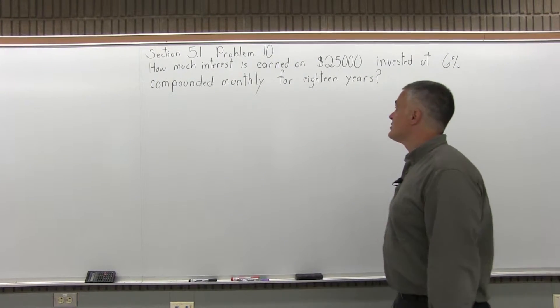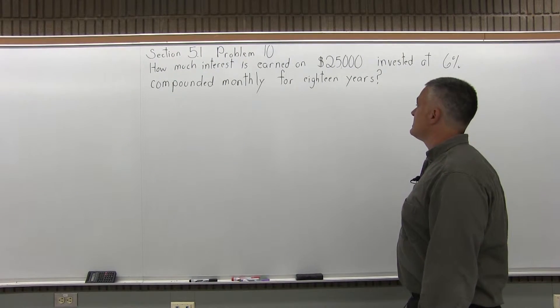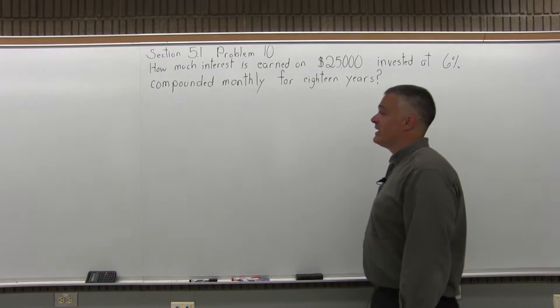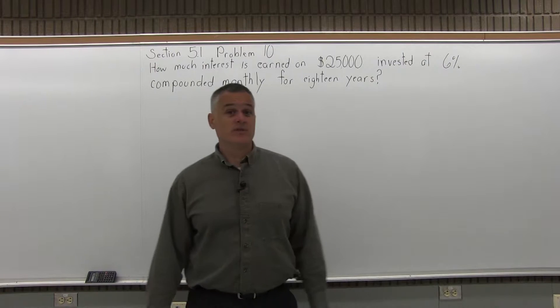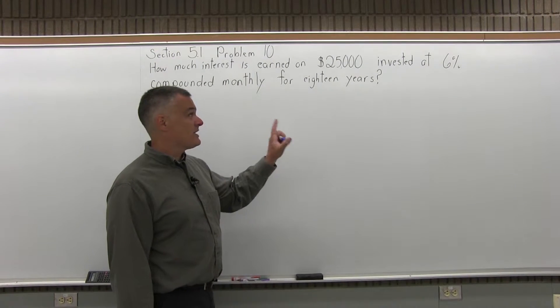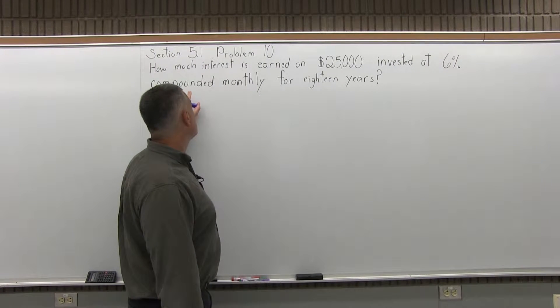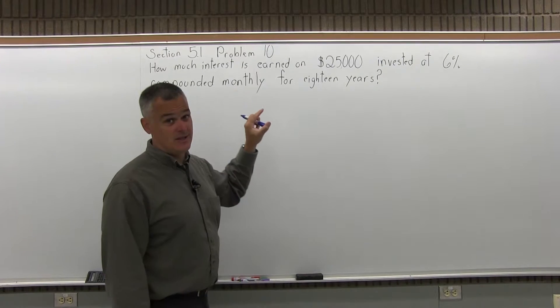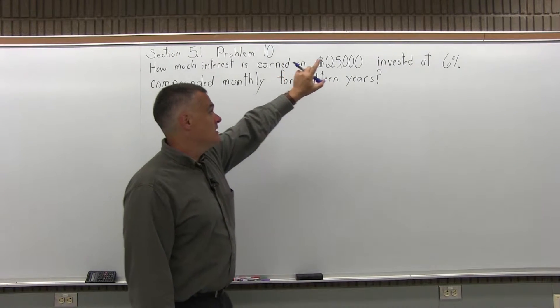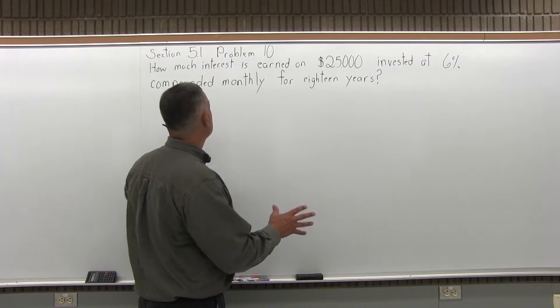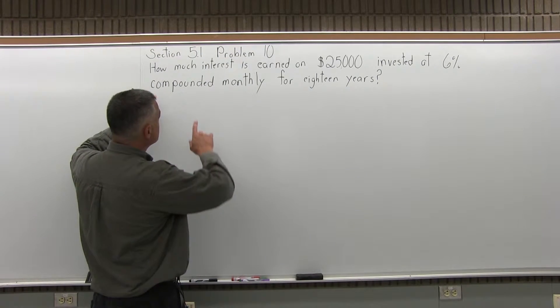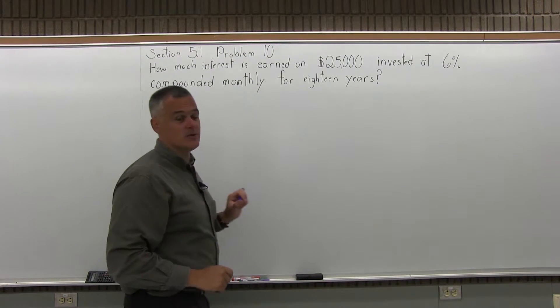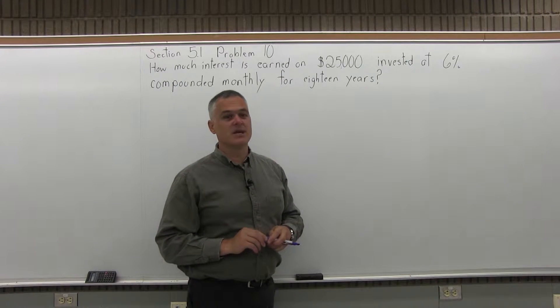It says how much interest is earned on $25,000 invested at 6% compounded monthly for 18 years. Now if you've tried the previous problem, it's almost the same. It's $25,000 invested at 6% simple interest for 18 years. Same starting amount, same interest rate, same number of years. The difference between number 9 and number 10: Number 9 has simple interest and number 10 has compound interest, and we'll see how much of a difference that makes.